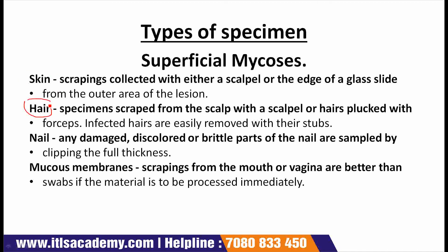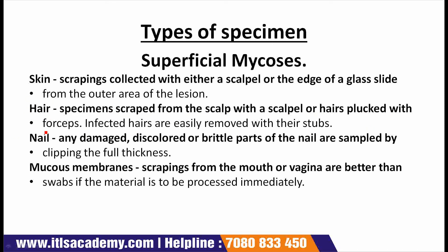The next specimen type is hair — specimens scraped from the scalp with a scalpel or hair plugged with forceps. Infected hairs are easily removed with their stubs. For nails, any damaged, discolored, or brittle parts are sampled by clipping the full thickness. Where a nail is grossly thickened, scrapings can be taken from underneath the nail to add to the clippings.